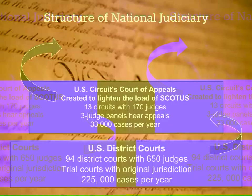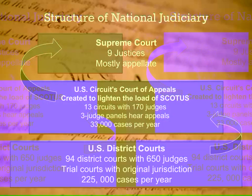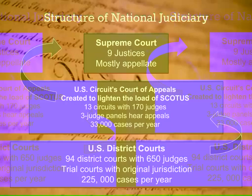Cases move up through the courts. If you don't like the decision from the US District Court, you have the right to appeal to the US Circuit Court of Appeals. Back in the day, cases went straight from District Court to the Supreme Court, but Congress had to create the Court of Appeals to lighten the Supreme Court's load. There are 13 circuits with 170 judges — no juries, just three-judge panels — hearing about 33,000 cases per year. The Supreme Court only hears about 100 cases out of more than 5,000 requests each year.